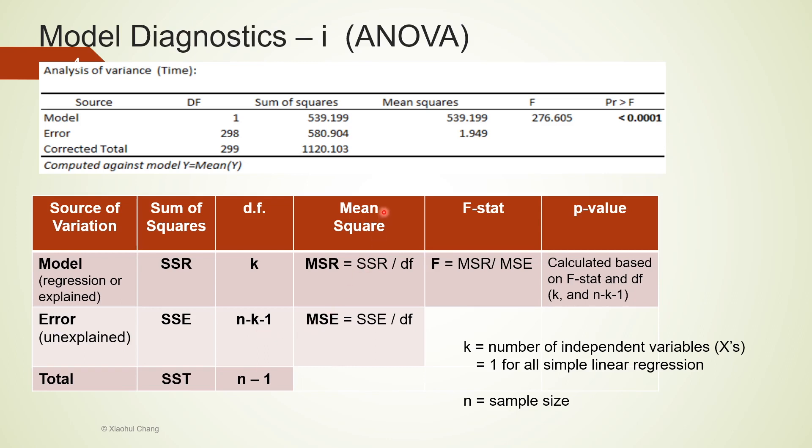The mean square column is just the ratio between the sum of squares and the degrees of freedom column. For example, MSR, mean square of regression, is just the ratio between SSR and k. Mean square of error, MSE, is just SSE with the corresponding degrees of freedom, n minus k minus 1. We don't need to calculate the mean square for the total. Please be sure to check these numbers using the numbers shown in the Excel stat output.